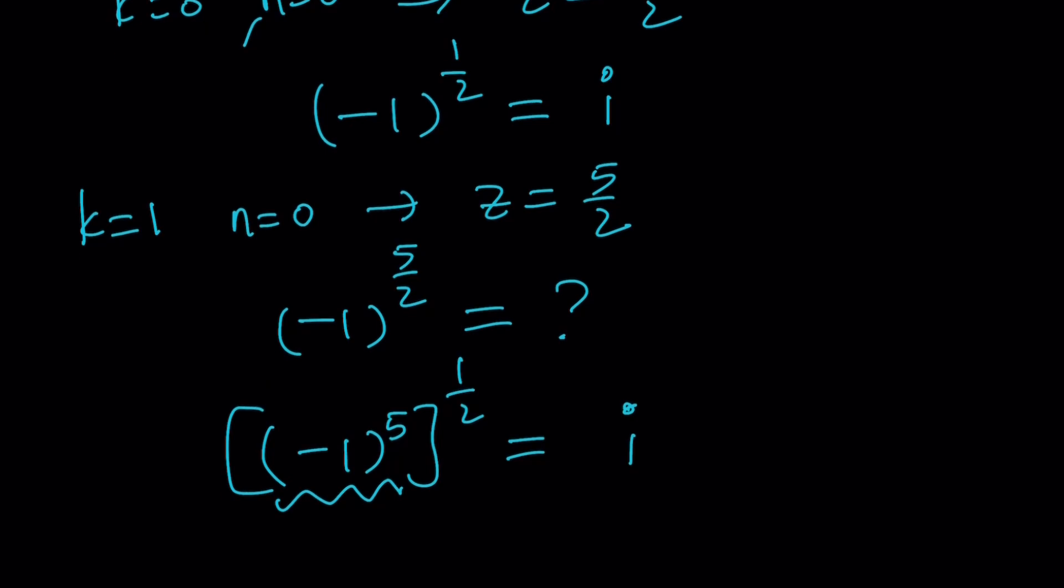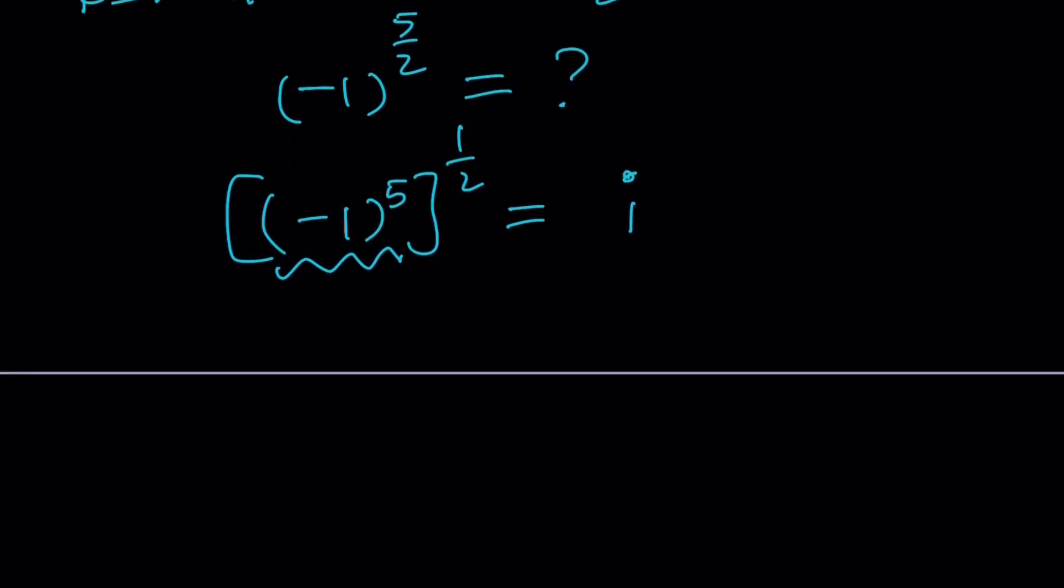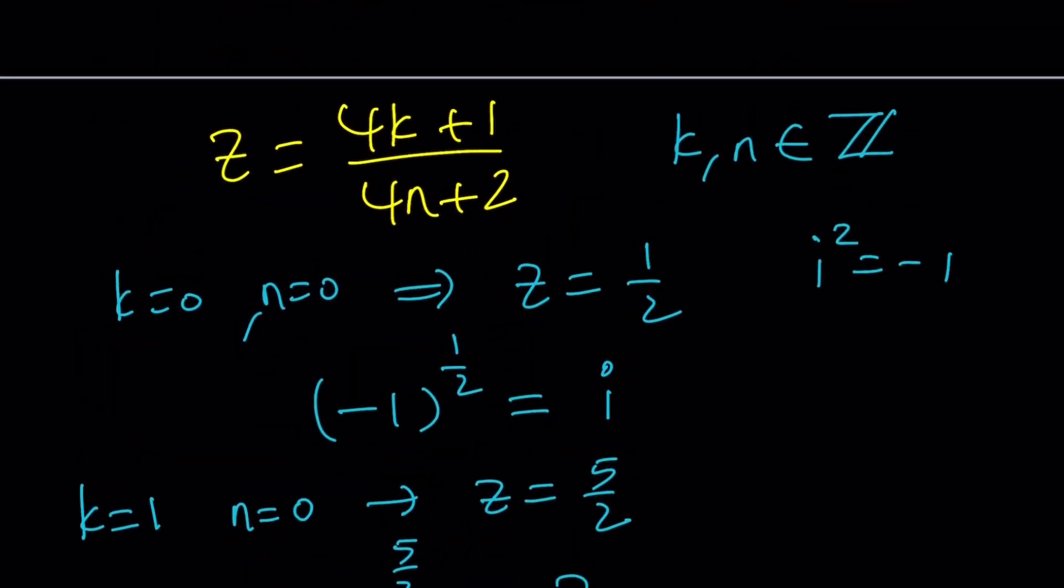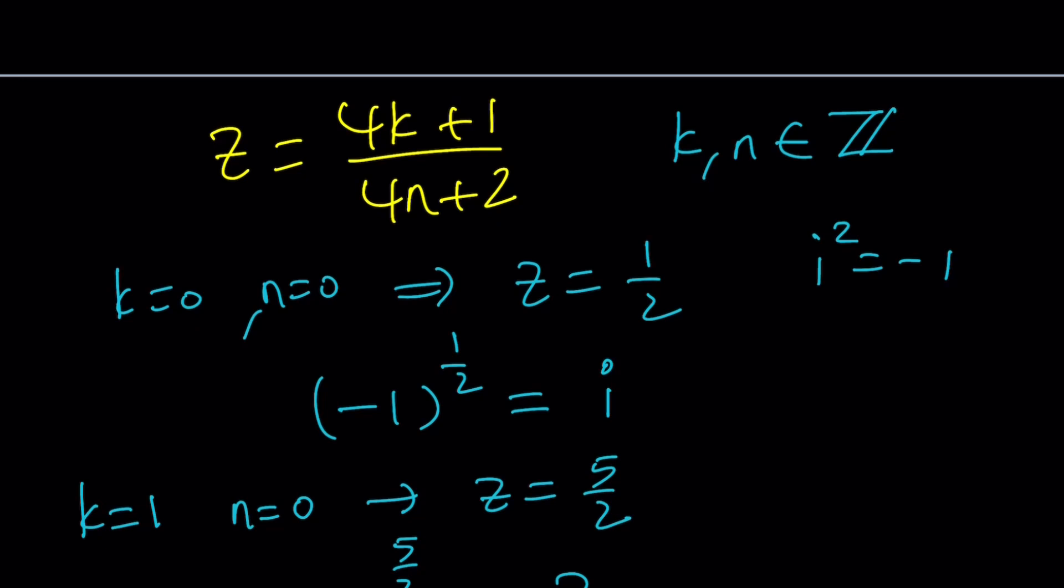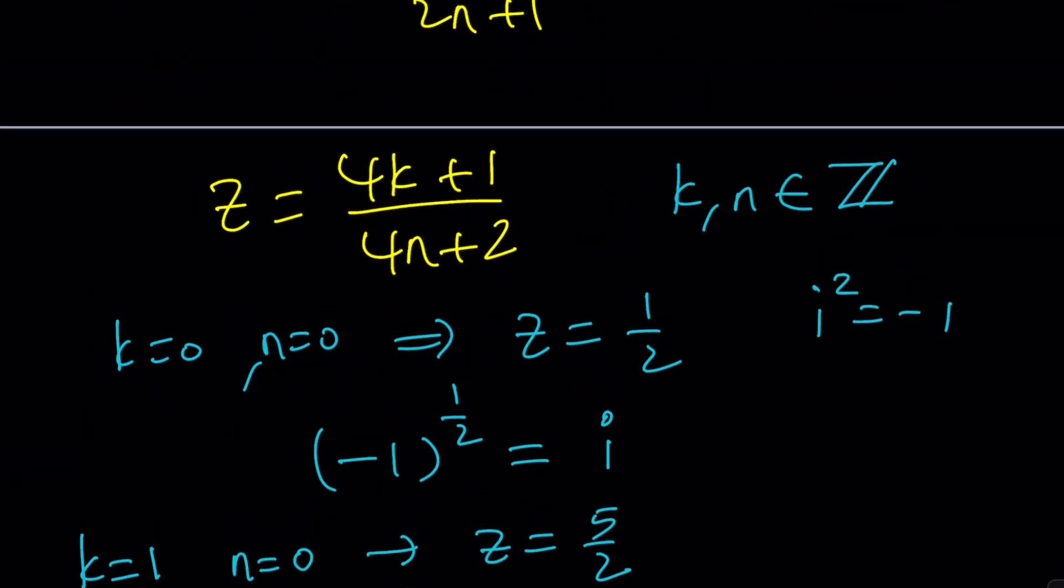Here's the thing: negative 1 to the power 5 halves could also be interpreted as negative 1 to the power 1 half to the power 5. And what specifies that we should only go with the principal values? You can kind of play with the values of k and n and then kind of find out what is working and what is not working. And one thing I want you to notice that 4k plus 1 is always odd and 4n plus 2 is always even, so these two will never have a common factor therefore we don't need to worry about simplifying this as a fraction.